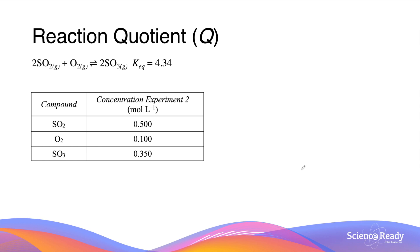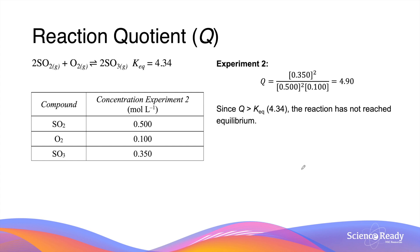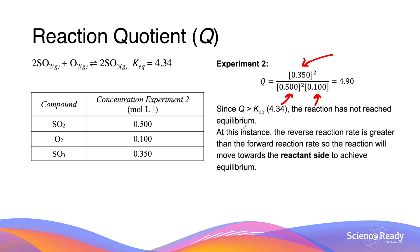To analyse experiment 2, we'll follow the same steps. We find the value of the reaction quotient by substituting the numbers into the expression — products at the top and reactants in the denominator. This gives us 4.90 as the reaction quotient. Because this number is not equal to the equilibrium constant, the reaction is not at equilibrium. However, unlike before, the reaction quotient is now larger than the equilibrium constant. So the reverse reaction rate is greater than the forward reaction rate, and as a result, the reaction will move towards the reactant side. Over time, the reactant concentrations will increase while the product concentrations will decrease.